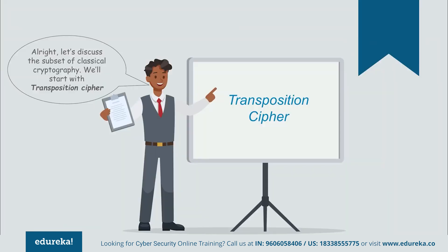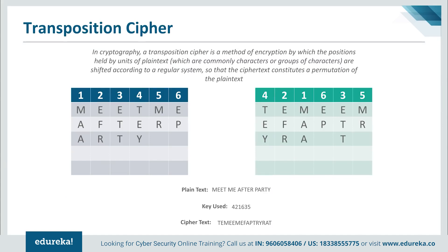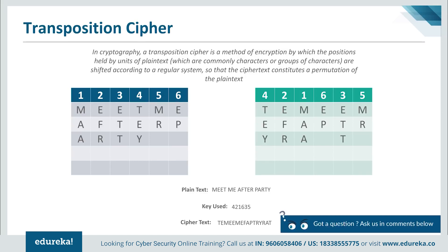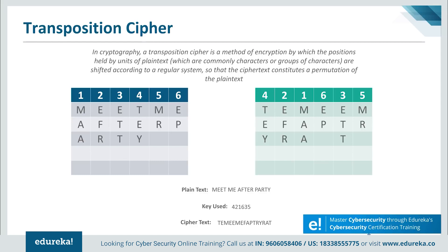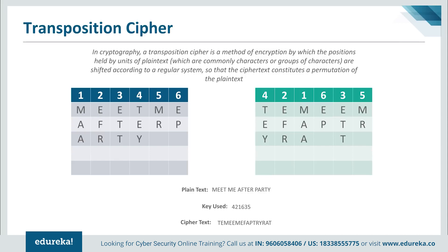In a transposition cipher, the positions held by units of plain text — commonly characters or groups of characters — are shifted according to a regular system, so that the ciphertext constitutes a permutation of the plain text. Mathematically, a bijective function is used on character positions to encrypt and an inverse function to decrypt. For example, a message 'meet me after the party' is arranged in an encryption matrix of six rows and columns, a key of 421635 is applied, and the rearranged result produces unreadable ciphertext.